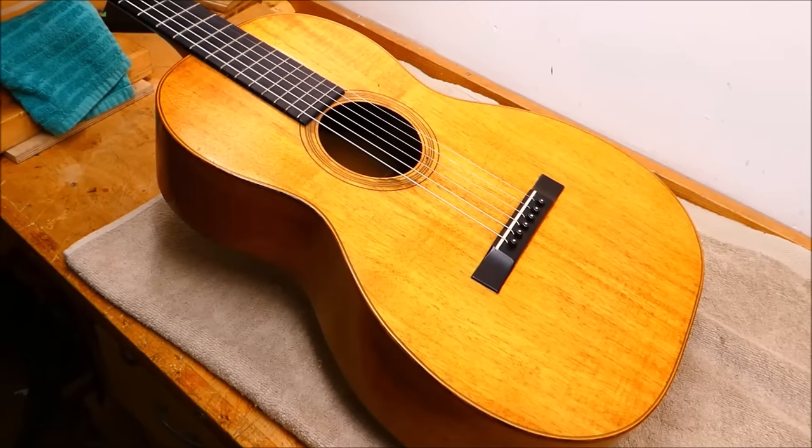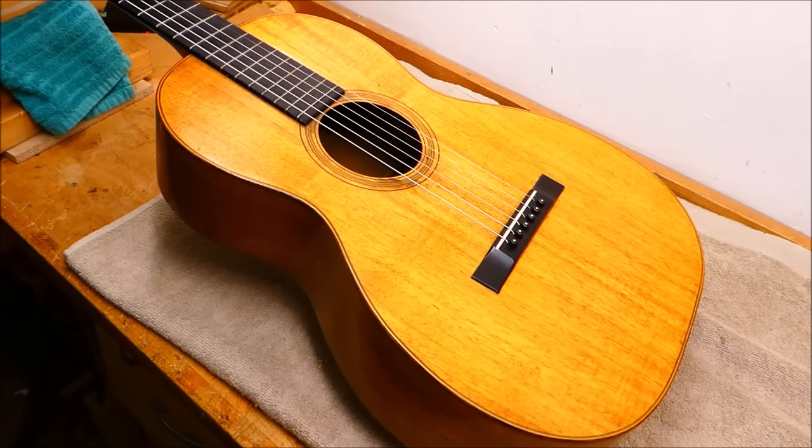Oh, hey there, gang. Today for your approval we have a gorgeous example of a 1925 Martin 018K. K, of course, stands for koa, which is that magical Hawaiian wood.